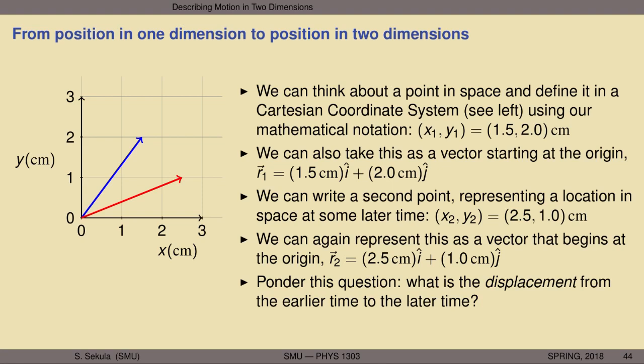We now have two vectors representing two locations in space: the position of an object at an earlier time and at a later time. The question is: what is the displacement in two dimensions from the earlier time to the later time? I encourage you to pause the video, try to work the answer out for yourself based on what we've learned about vectors and vector arithmetic, then resume.